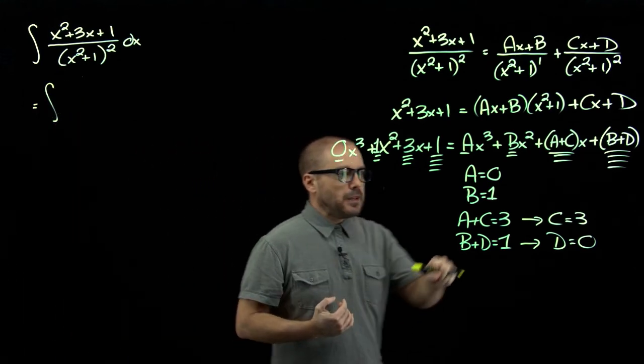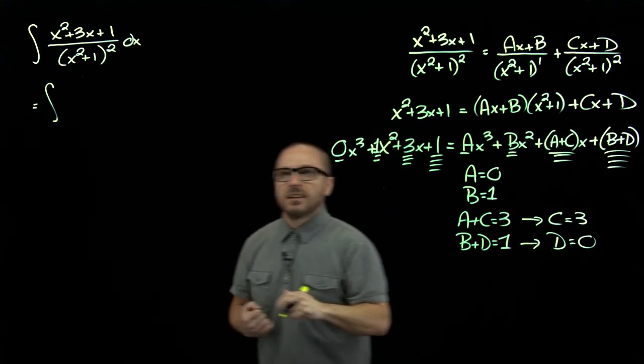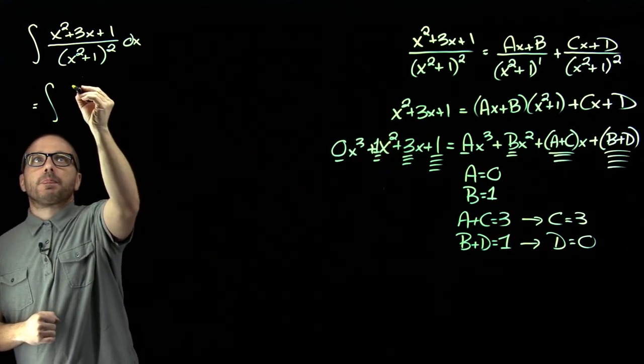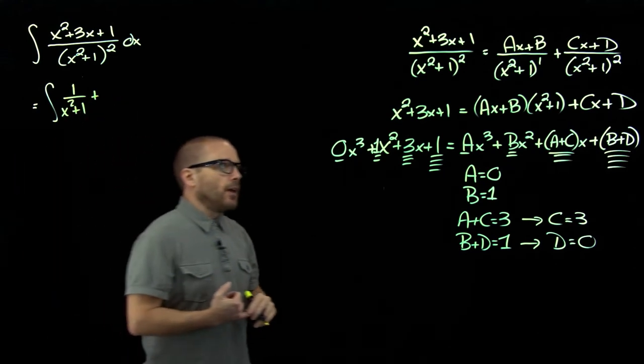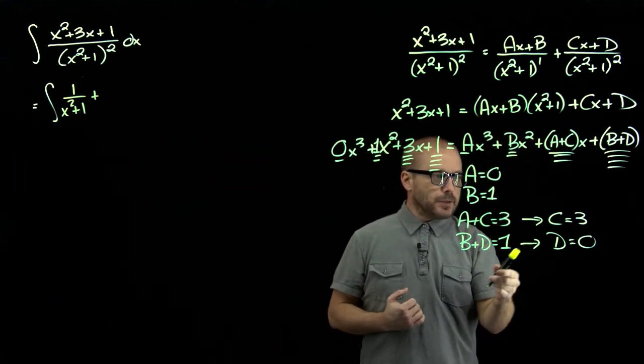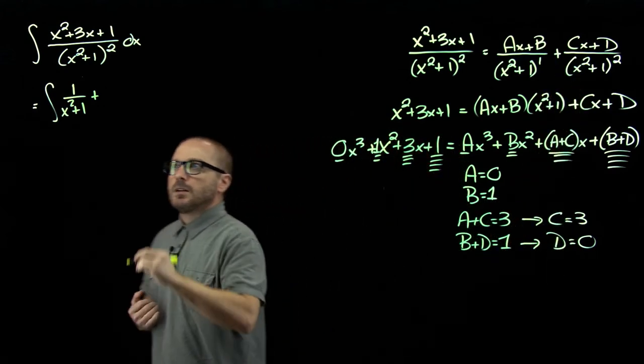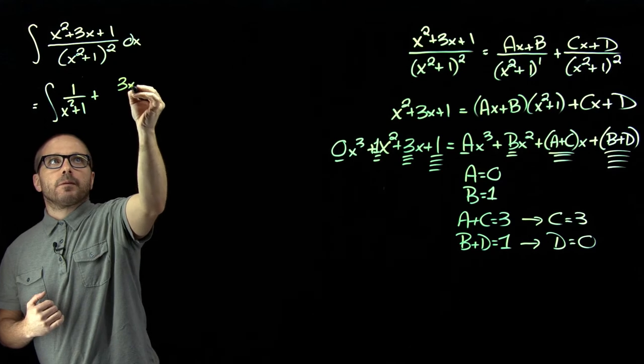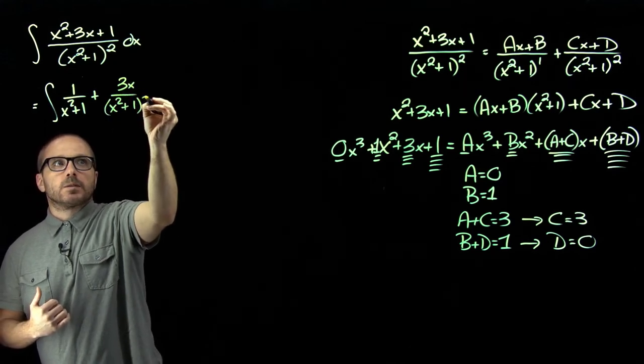Ax plus b, no, x plus one. So, one over x squared plus one. And then for our second expression, cx plus d, three x plus nothing. So, three x over x squared plus one squared.